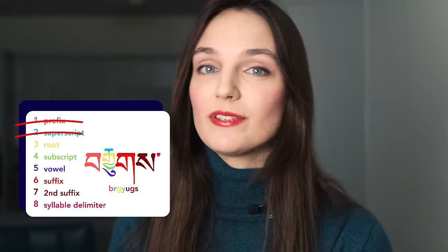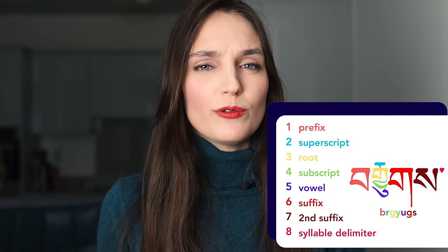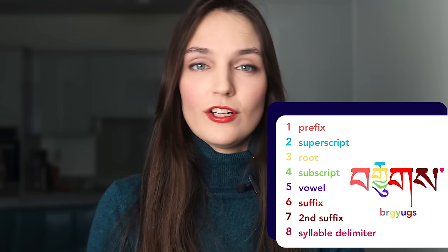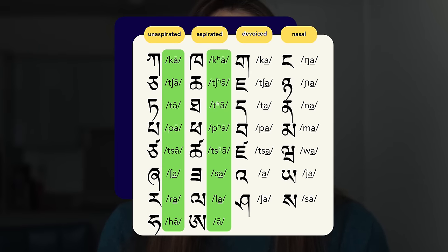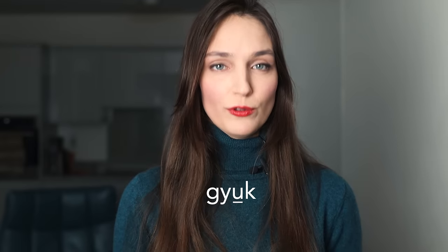But fast-forward 14 centuries and we find that many things have merged and simplified. The prefix, the superscript, and the second suffix are not pronounced anymore. The subscript and the suffix may or may not be pronounced, and only the root kept its original pronunciation, though it may be modified by the symbols around it. To compensate for this simplification, Tibetan developed two tones — high and low. So instead of 'Brgyuks', we would now read 'Gyuk'.